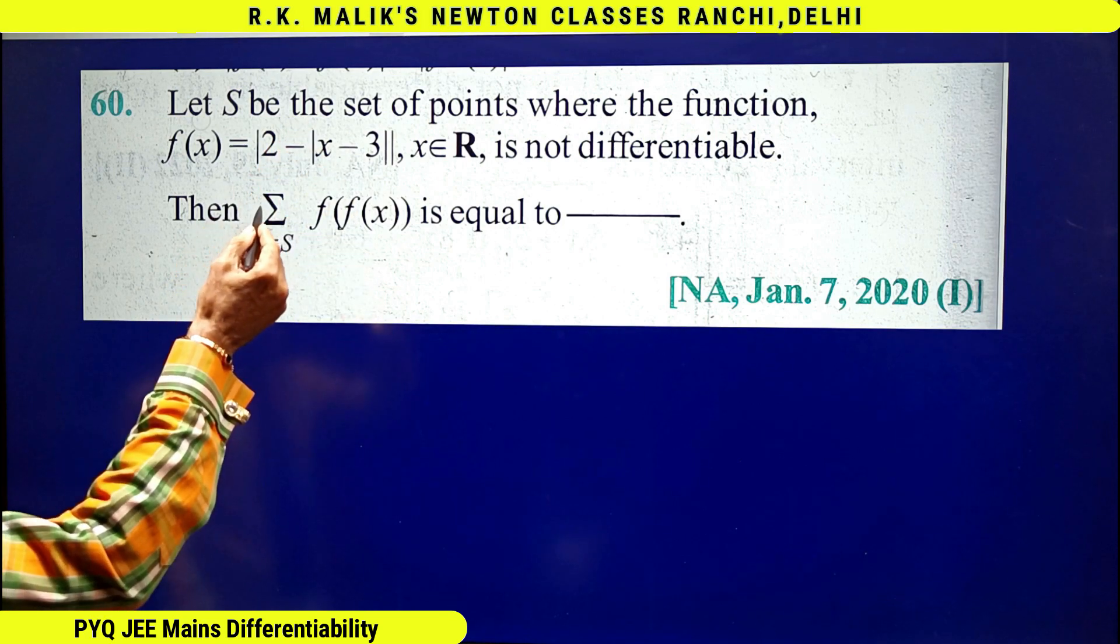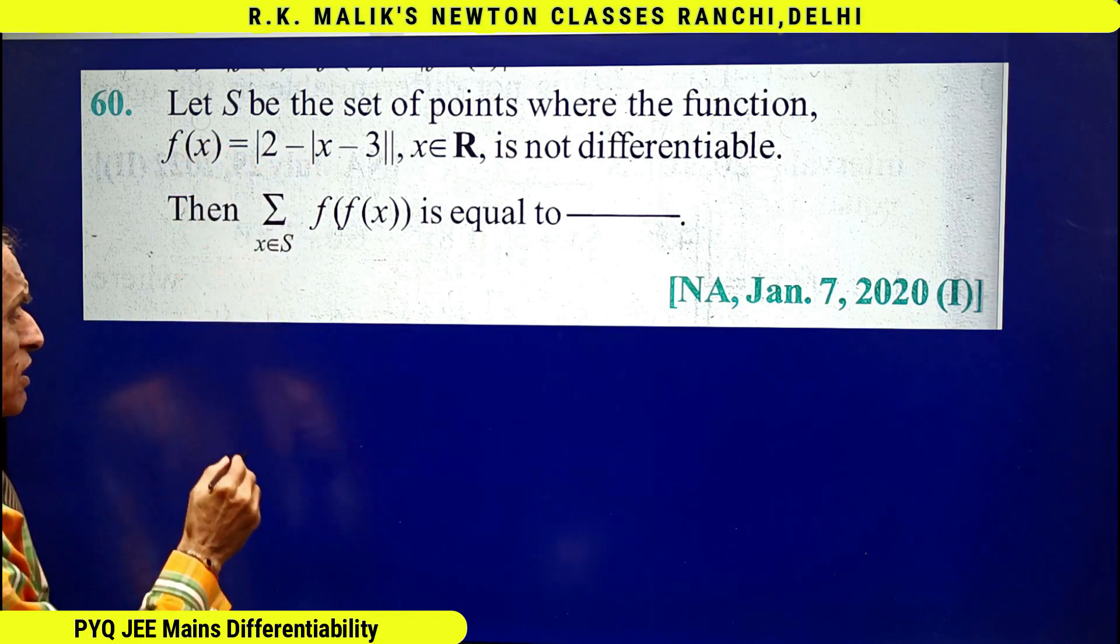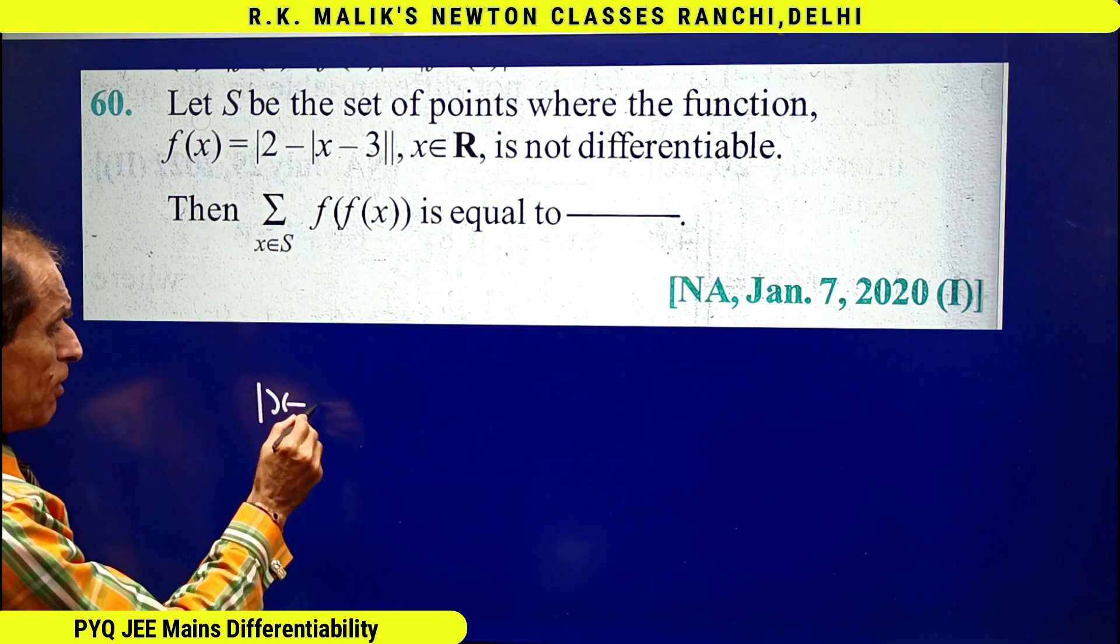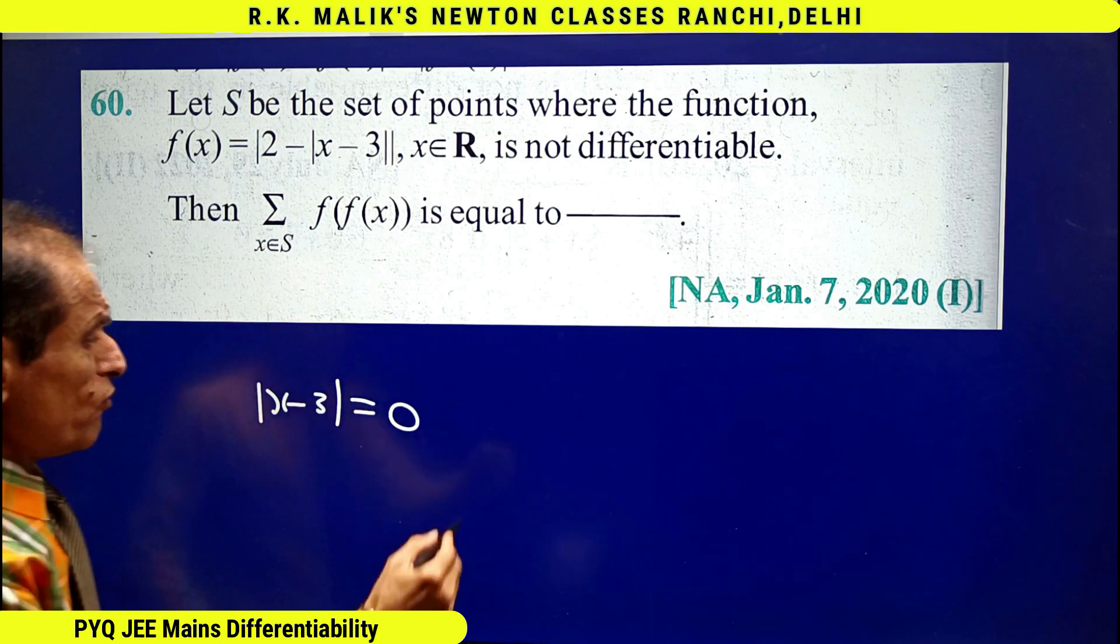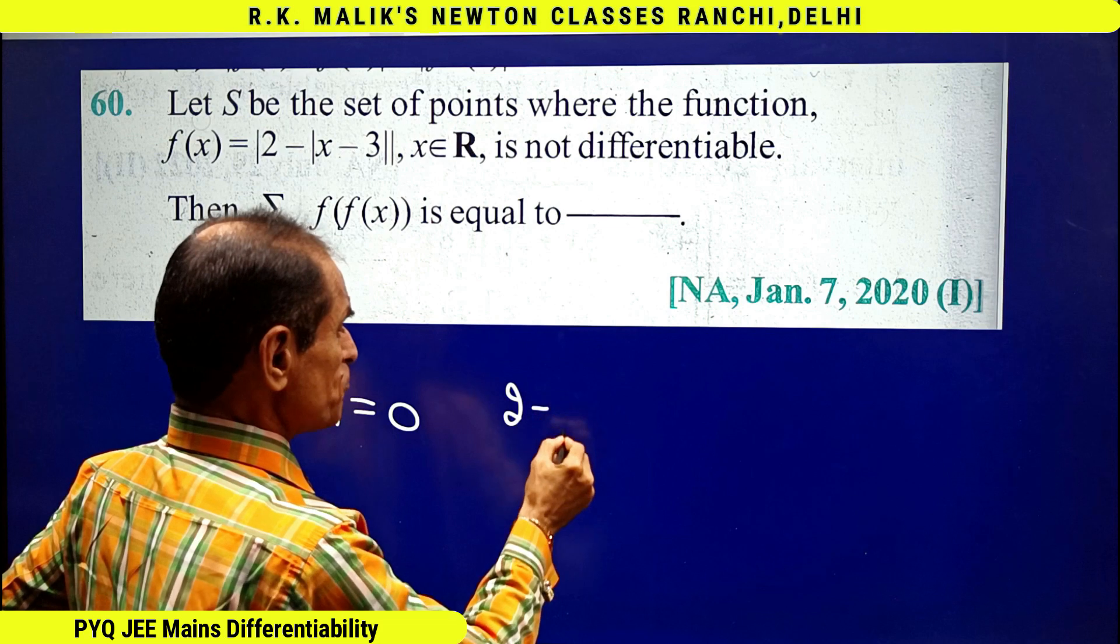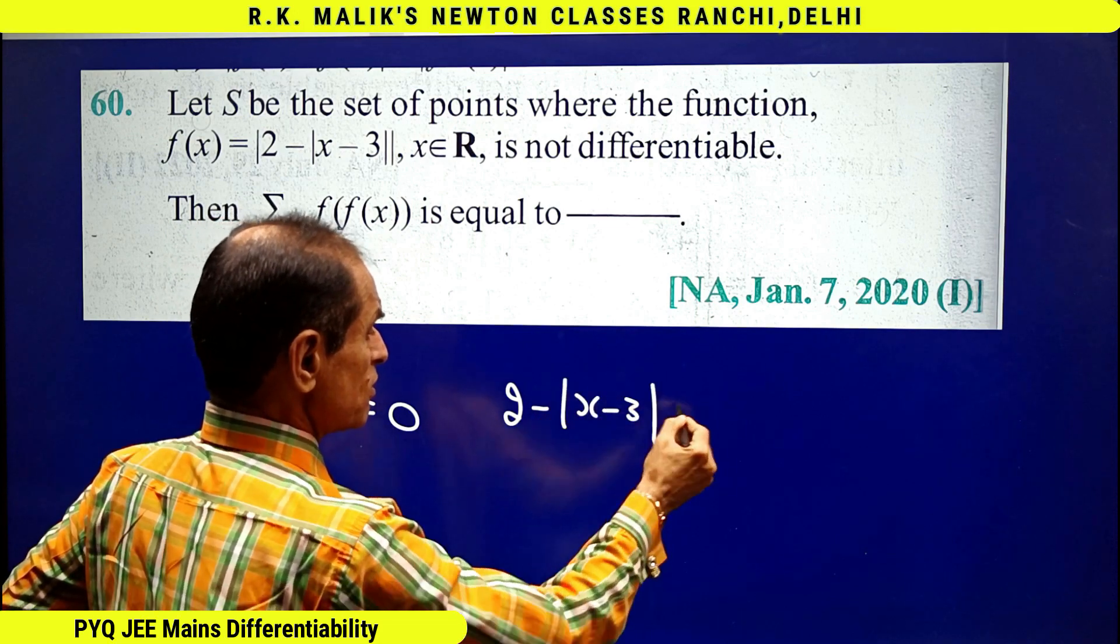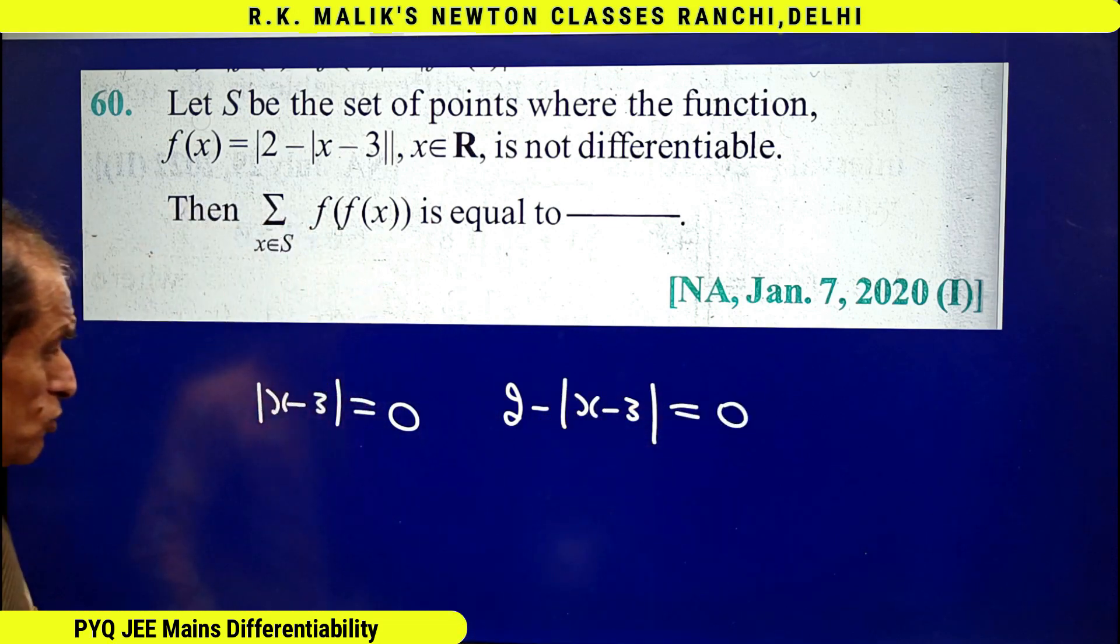Here I will say this is non-differentiable at the points where mod of x minus 3 is 0, or where 2 minus mod of x minus 3 is equal to 0.